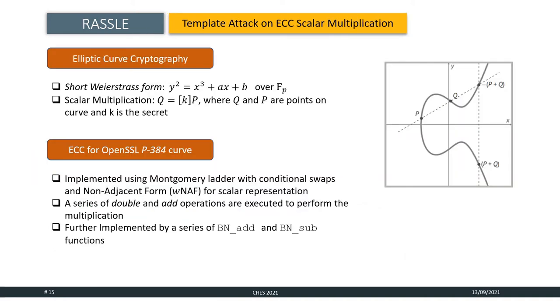To demonstrate RASL in a real-world setting, we target the scalar multiplication operation in P384 curve from OpenSSL library. Elliptic curve cryptography is one of the most widely used asymmetric key algorithms based on the algebraic properties of elliptic curves over finite field. Scalar multiplication is a fundamental security critical operation in ECC which computes Q equals to K·P where K is an n-bit secret scalar and Q and P are points on the elliptic curve. The security of ECC is defined by the hardness of determining the scalar K given both the points and the curve parameters. The scalar multiplication in OpenSSL for this curve is implemented using Montgomery ladder with conditional swaps and non-adjacent form for scalar representation. The scalar K is transformed to its corresponding wNAF representation and based on this representation a series of double and add operations are executed to perform the multiplication. These operations are further implemented by a series of BN_add and BN_sub functions.